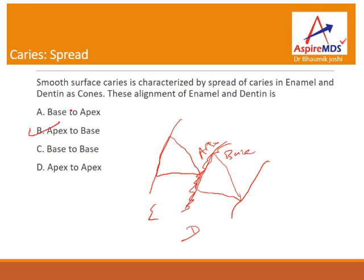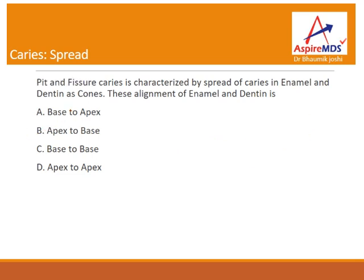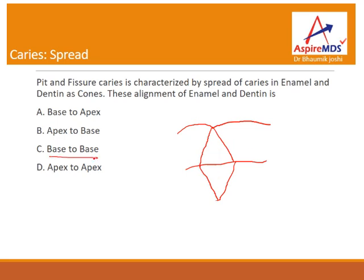The same question asked for pit and fissure caries: it will start in the form of a triangle with the base coming towards the DEJ, and then the caries from here will go in this manner. So in case of pit and fissure caries, the relation is called base to base spread.